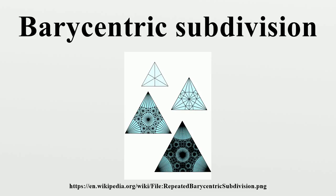For example, if one makes a straight cut from the barycenter of a triangle to each of its three corners, one obtains a subdivision into three triangles. Generalizing this idea, one obtains a schema for subdividing a dimensional simplex into simplices. However, this subdivision is not the BCS. The barycentric division can also be defined for simplicial sets, in a way that is compatible with the above division of simplices.